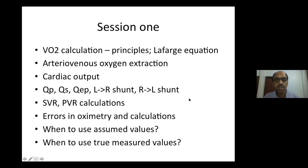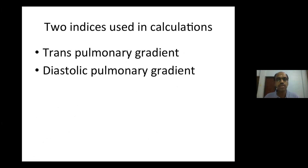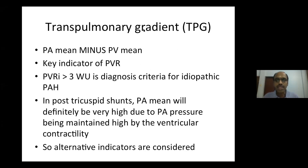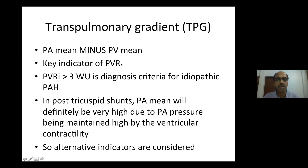What are the errors in oximetry and in the calculations? When we should use assumed values rather than true measured values, and when we should use measured values rather than assumed values. A couple of indices used in the calculation are transpulmonary gradient and diastolic pulmonary gradient. Transpulmonary gradient is otherwise the numerator of pulmonary vascular resistance — it is pulmonary artery mean minus pulmonary vein mean, and it is the key indicator of pulmonary vascular resistance.